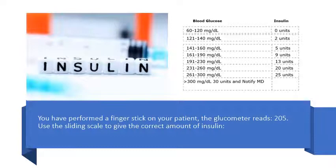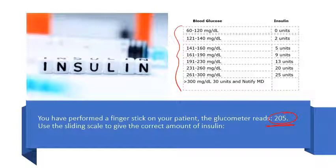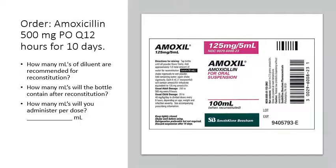This problem is an example of reading a sliding scale. You performed a finger stick and the glucometer reads 205 milligrams per deciliter. Use the sliding scale to find where 205 falls — it falls between 191 and 230. Therefore, you will give 13 units of insulin to cover this patient.